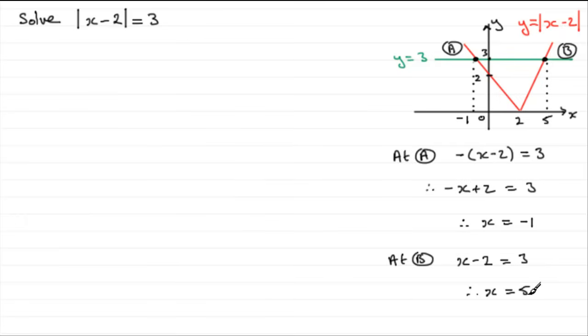And again, check it out. 5 works. 5 take 2 is 3. The mod of plus 3 is 3. So our solutions then are basically x equals minus 1 and 5. All right, so just highlight that there.